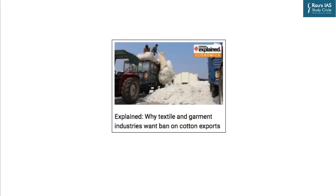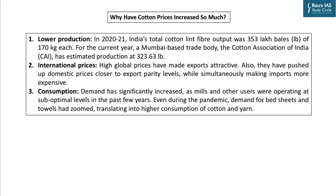There is an explained article discussing why textile and garment industries want a ban on cotton exports. The reason is pretty simple — the cost of cotton yarn has grown by about 100% in the last one year. Cotton prices have soared because of lower production, which has declined by around 10% this year compared to last year. International prices have also increased, making exports more attractive. Additionally, domestic demand for cotton yarn has increased significantly — during the pandemic, demand for bedsheets, towels, and other fabrics zoomed.